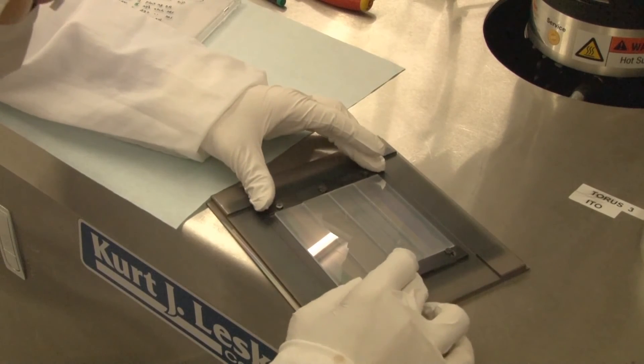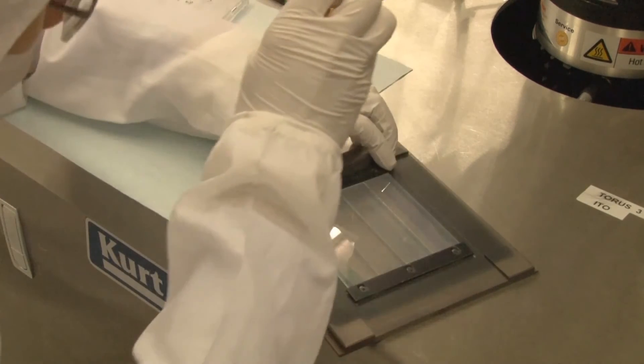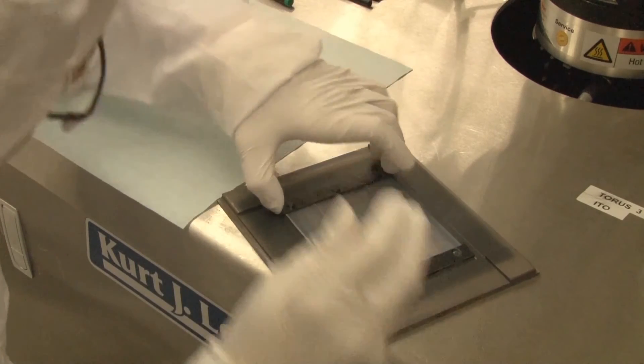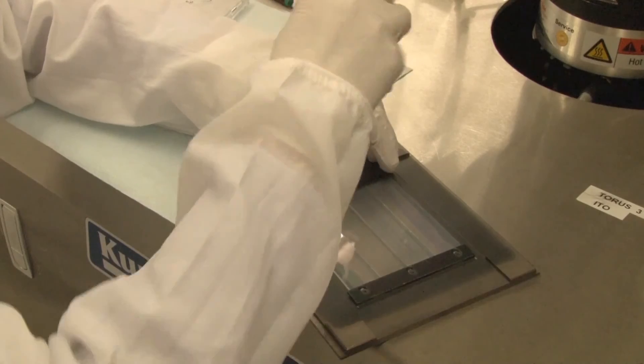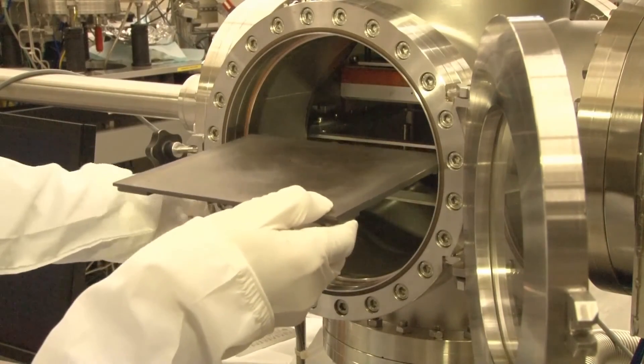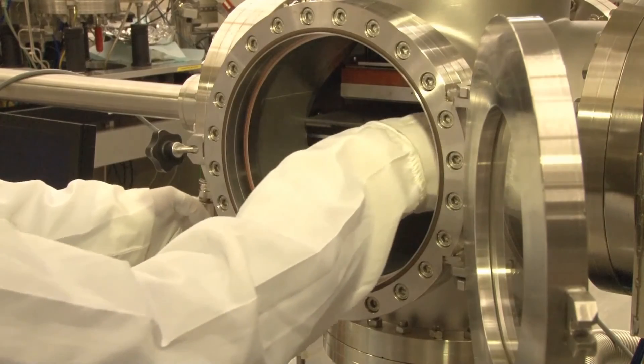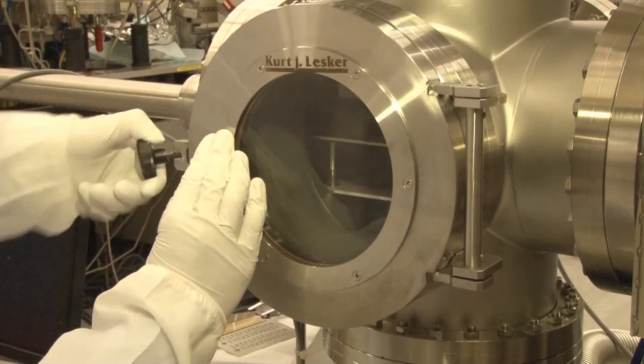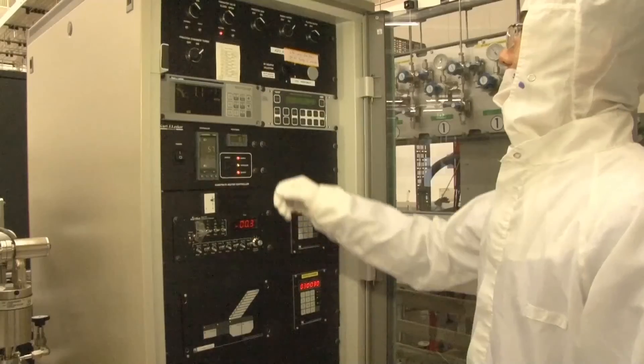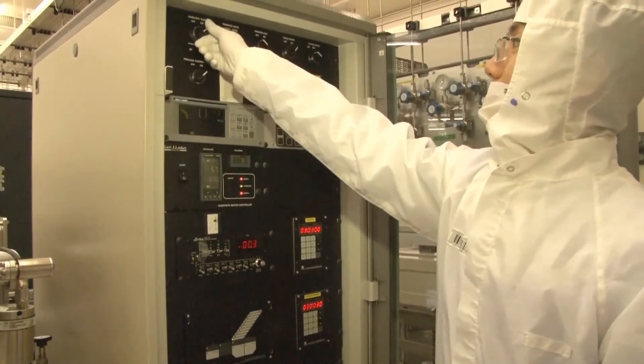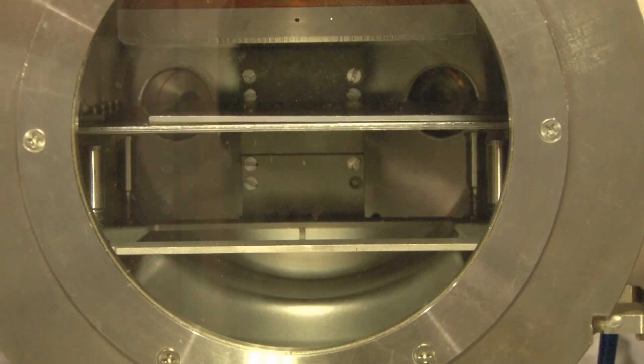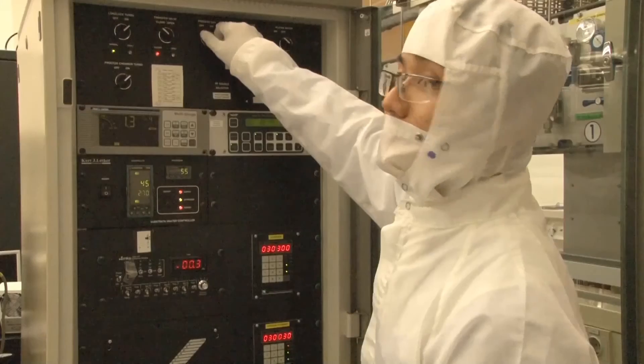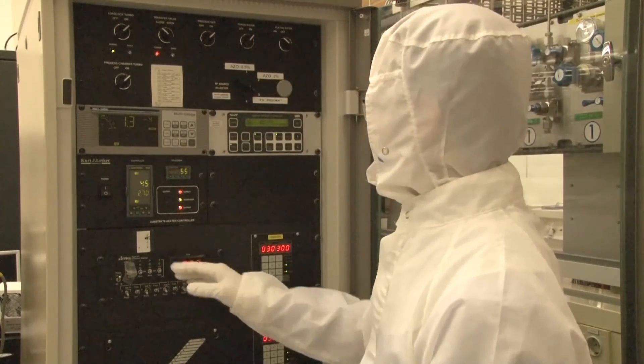In this movie, we deposit a thin zinc oxide layer on top of the Asahi substrate to protect the tin oxide from the next processing steps. The substrate is mounted on a sample holder and put into a load lock. A load lock is a chamber in which the substrate is brought under low pressure before it is moved into the processing chamber. This avoids the processing chamber to be contaminated with various unwelcome atoms and molecules present in ambient air.